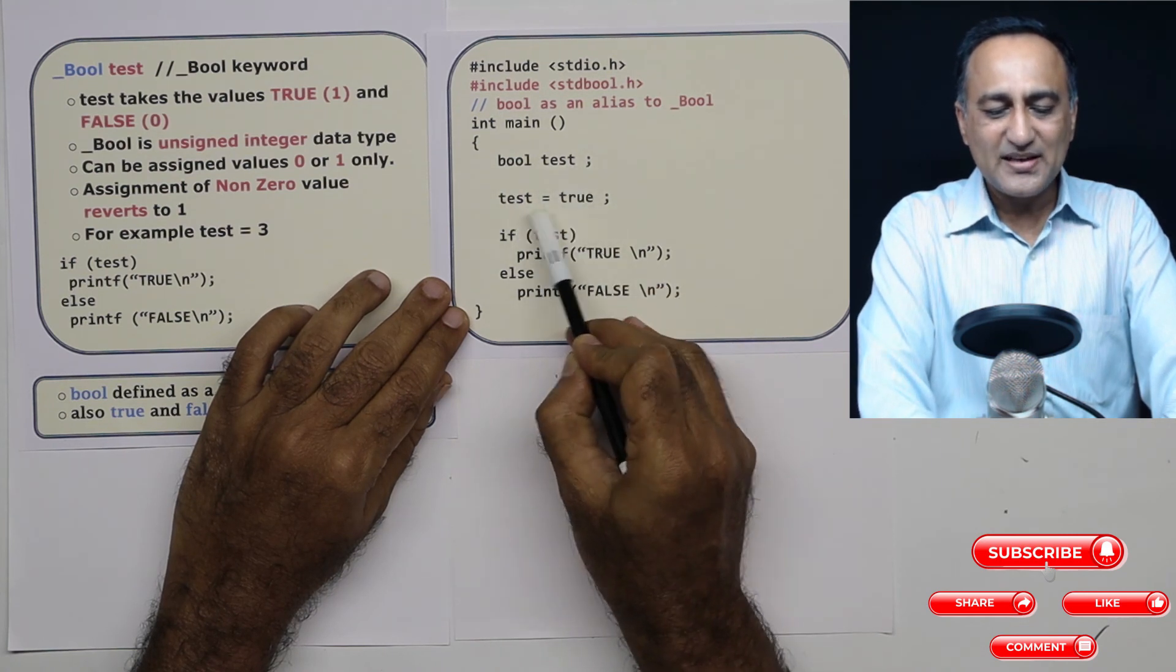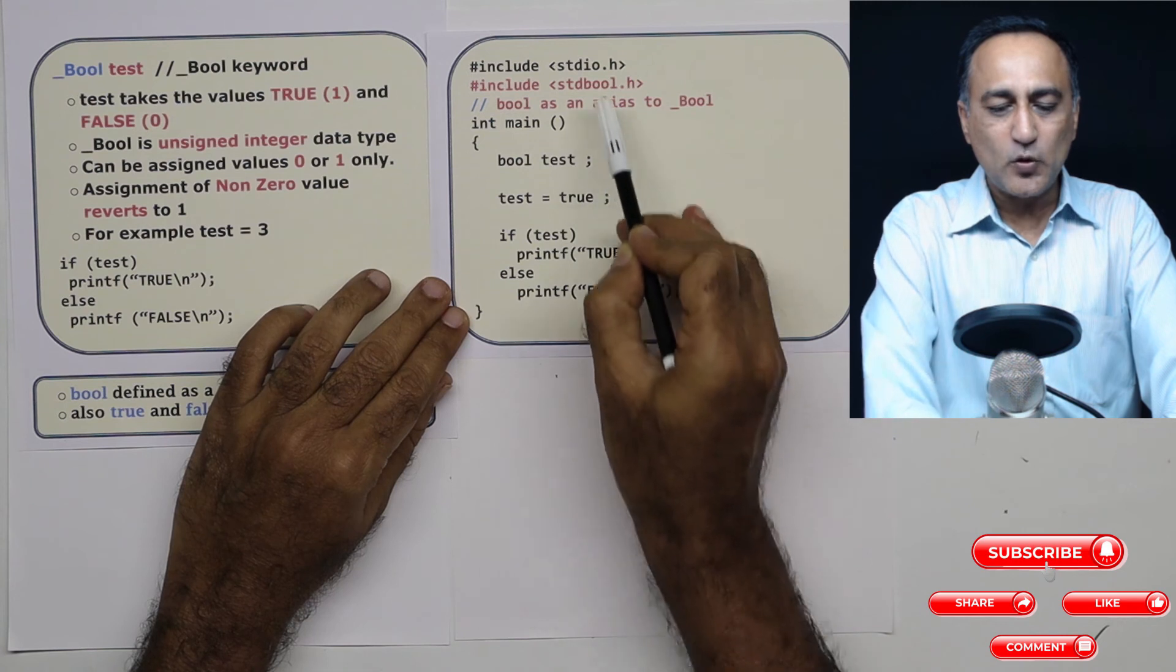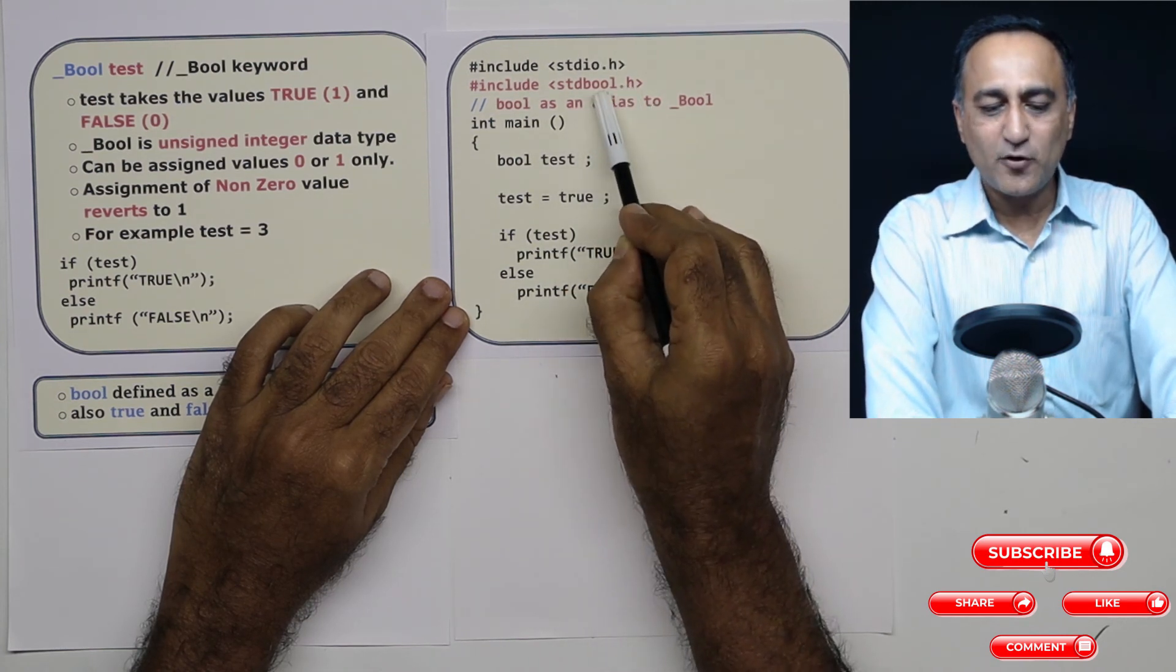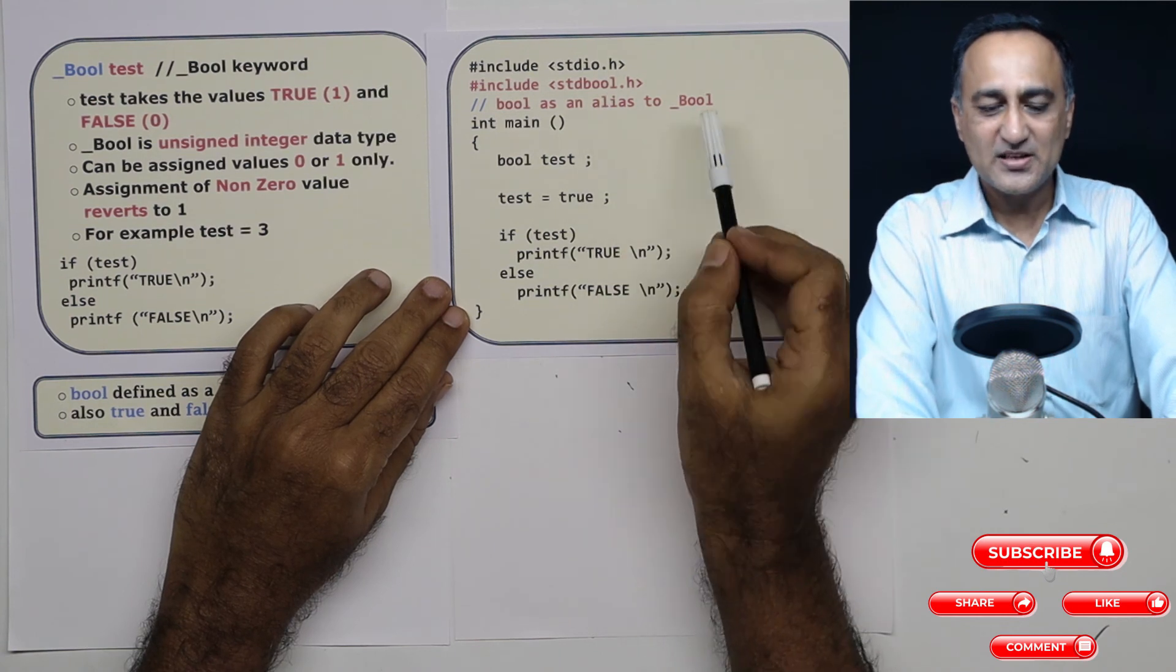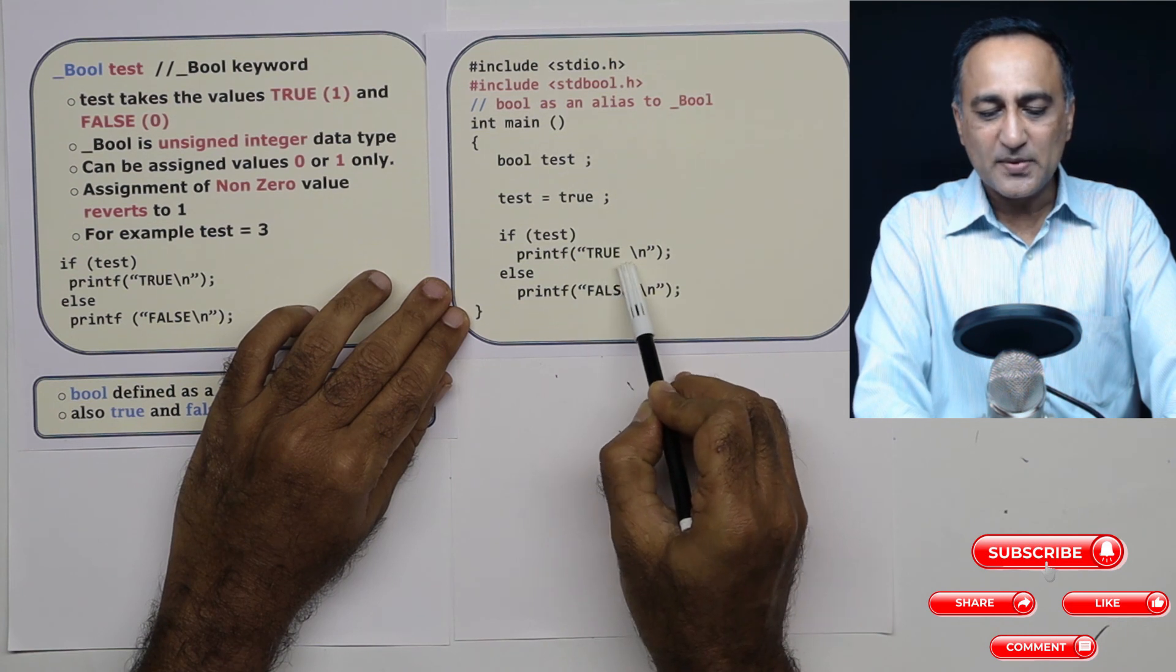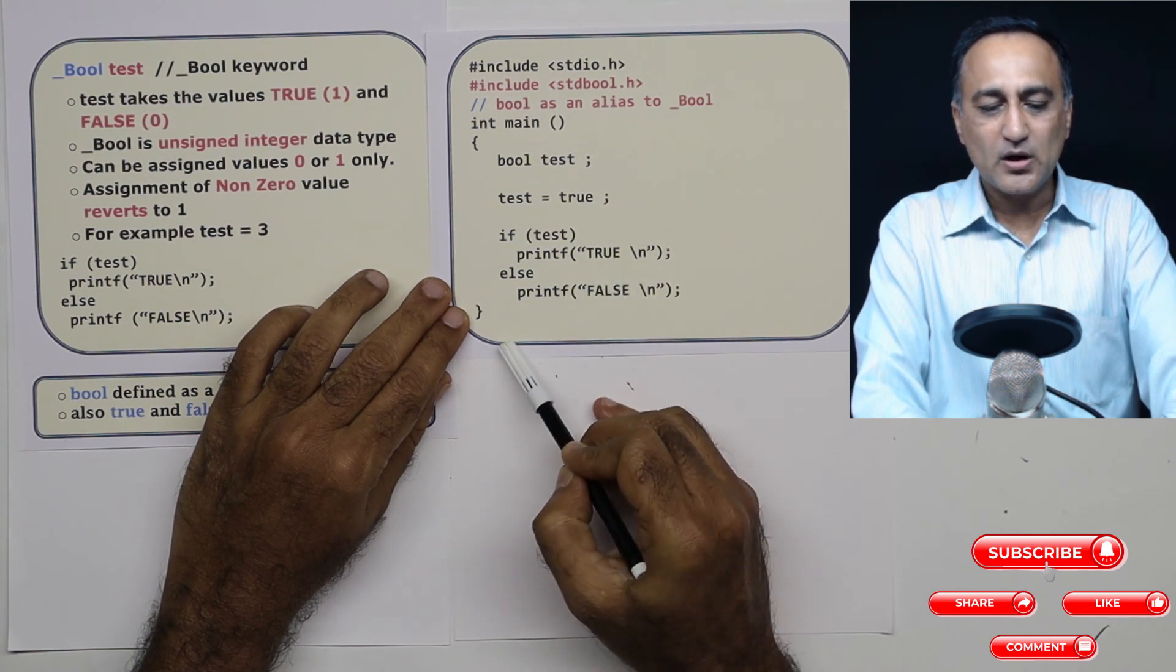Now what I am doing is I am saying test equal to true because true has been defined as one in standard bool.h. False in lowercase has been defined as zero. So since if test is equal to true, it is going to print this message and then it is going to come out.